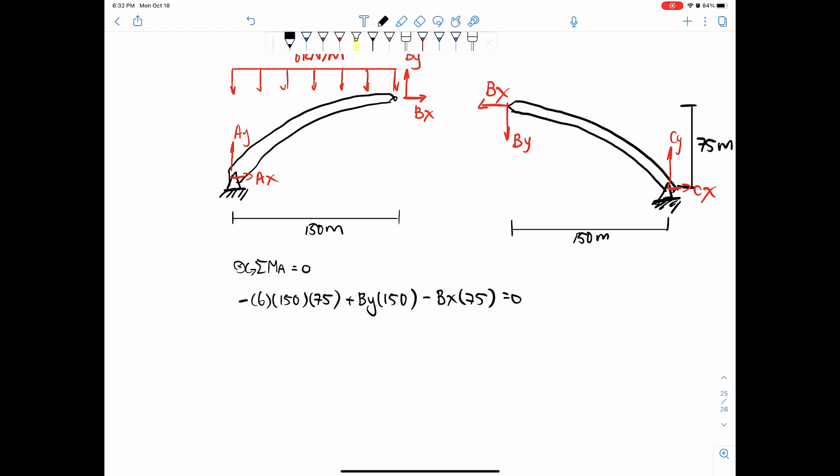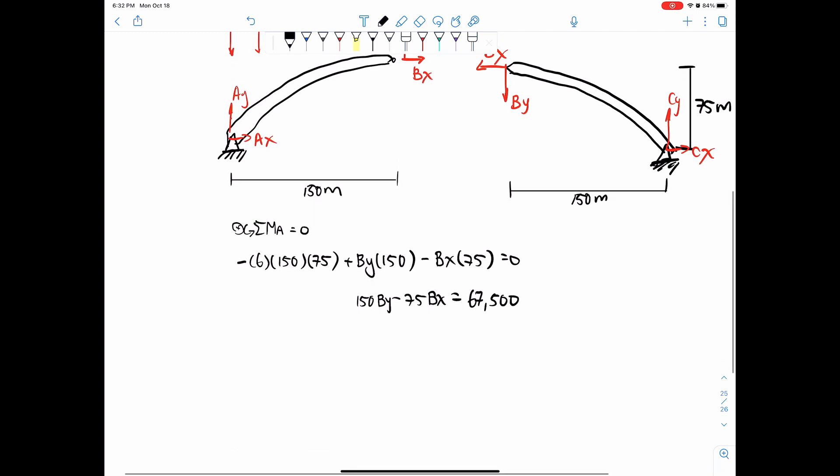So then that equals to zero. So we can simplify this. We can say that 150BY minus 75BX equals 6 times 150 times 75, which gives you 67,500. And then we can simplify this even more, divide everything by 75. So that would equal 2BY minus BX equals 900. So that's your first equation.